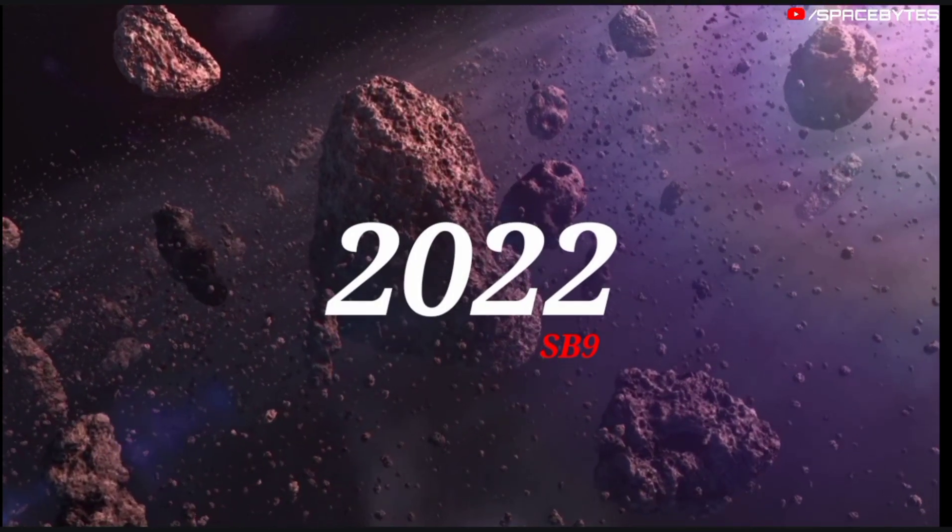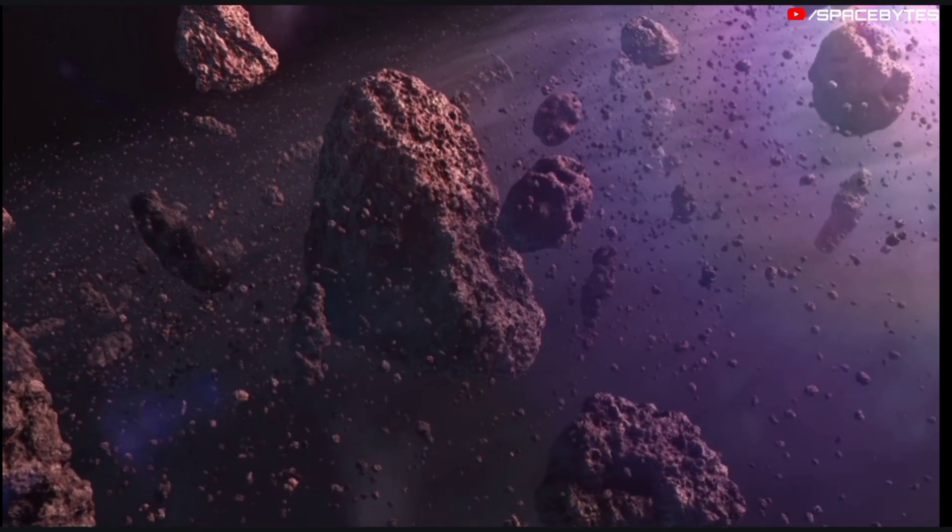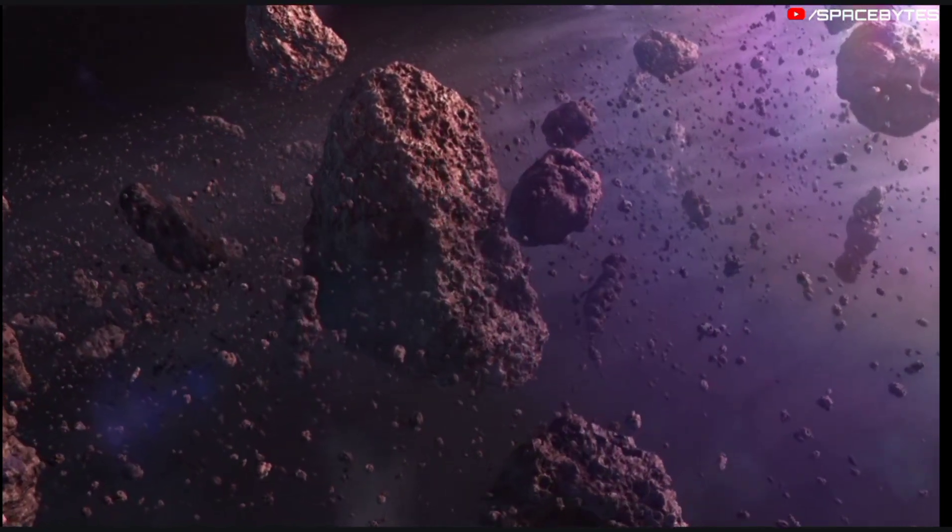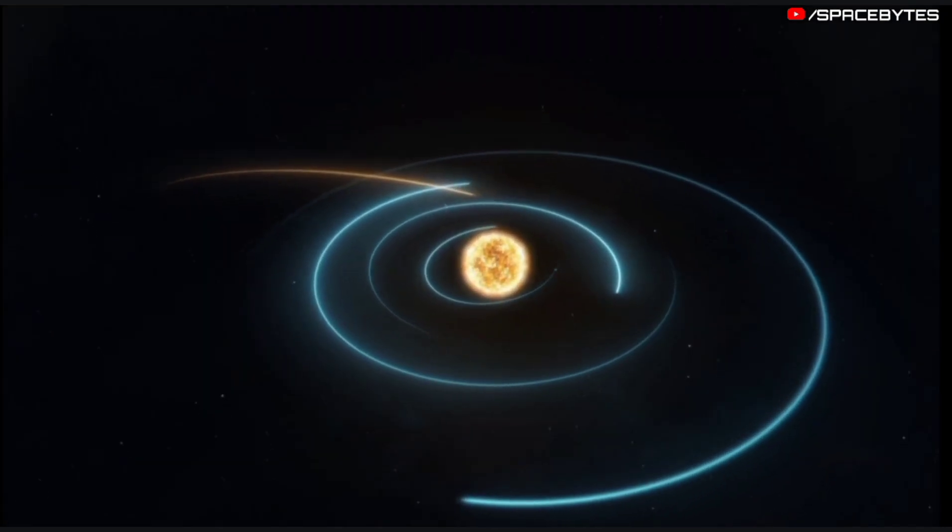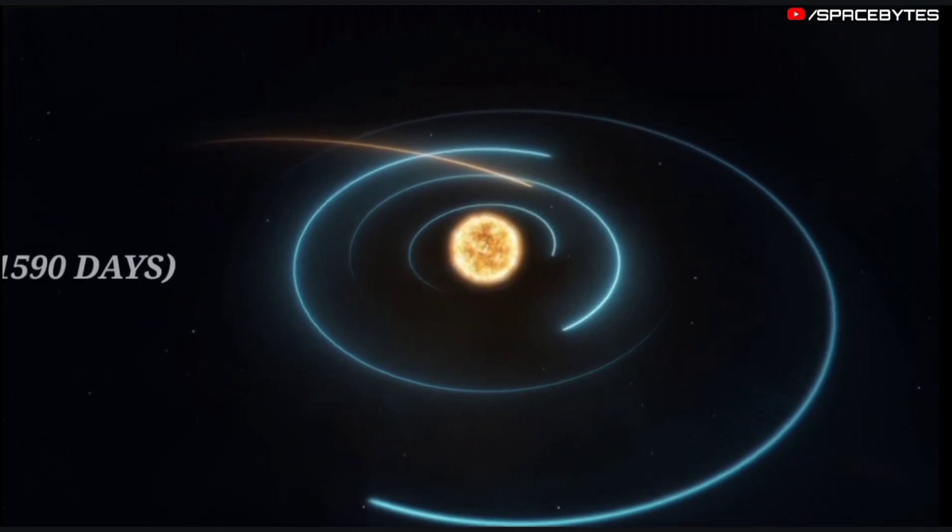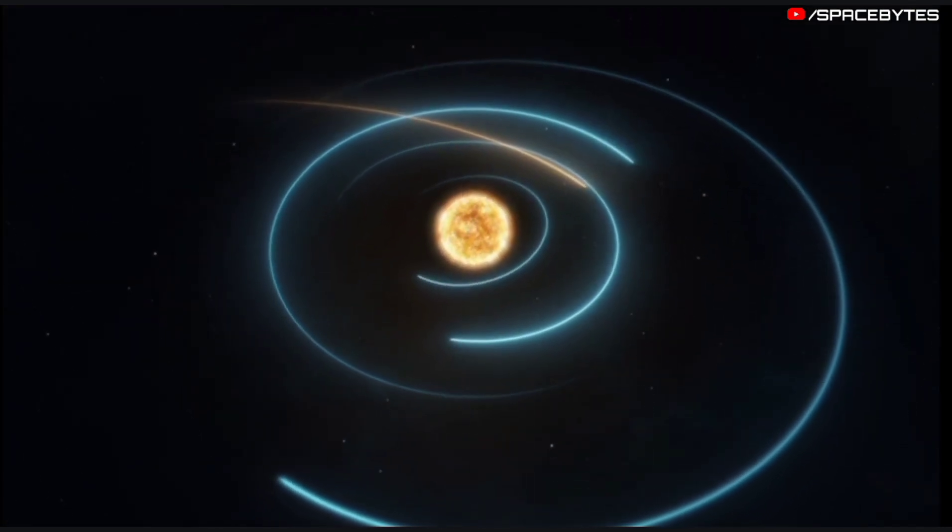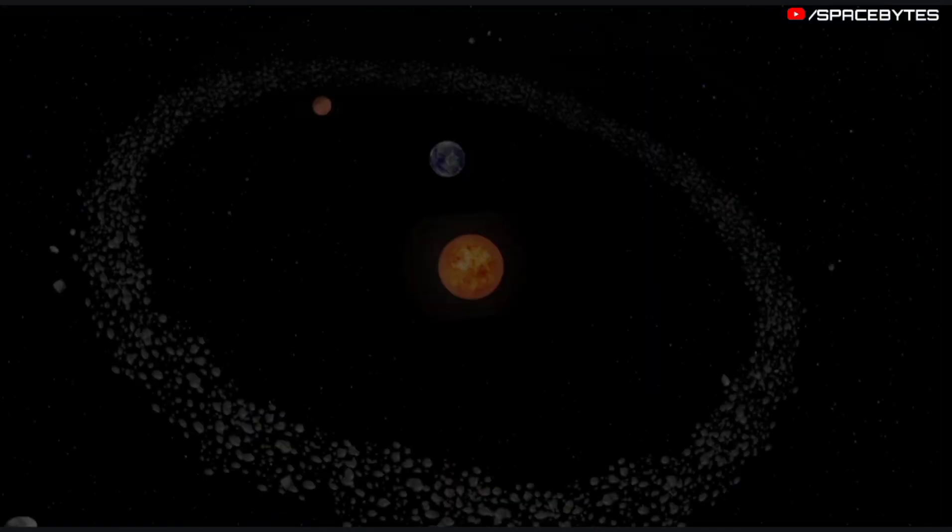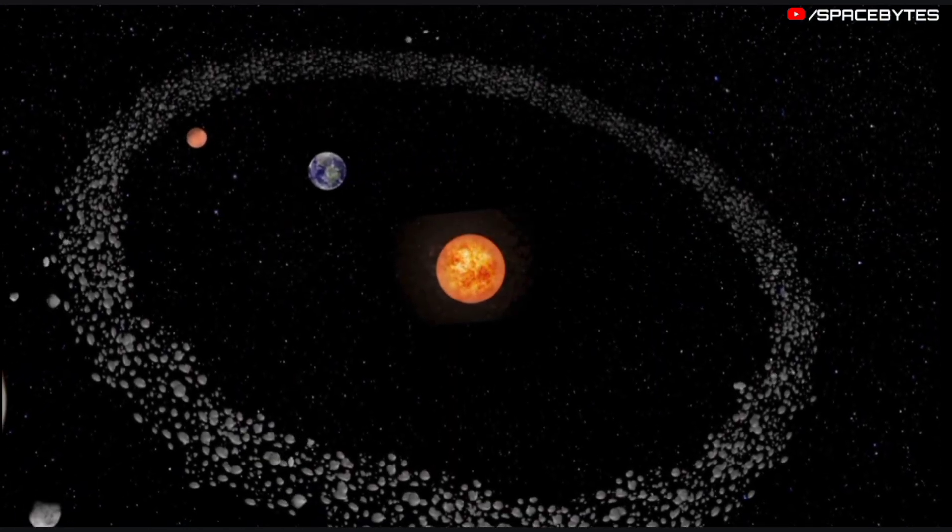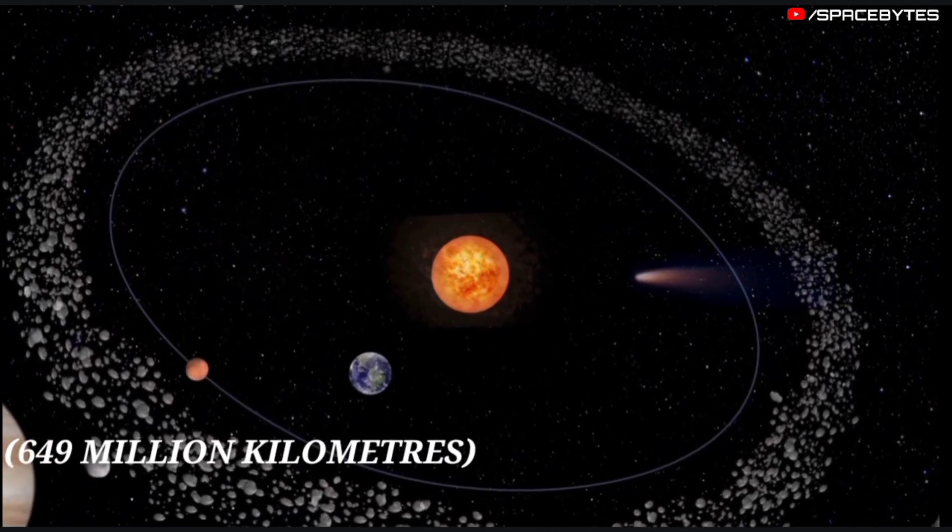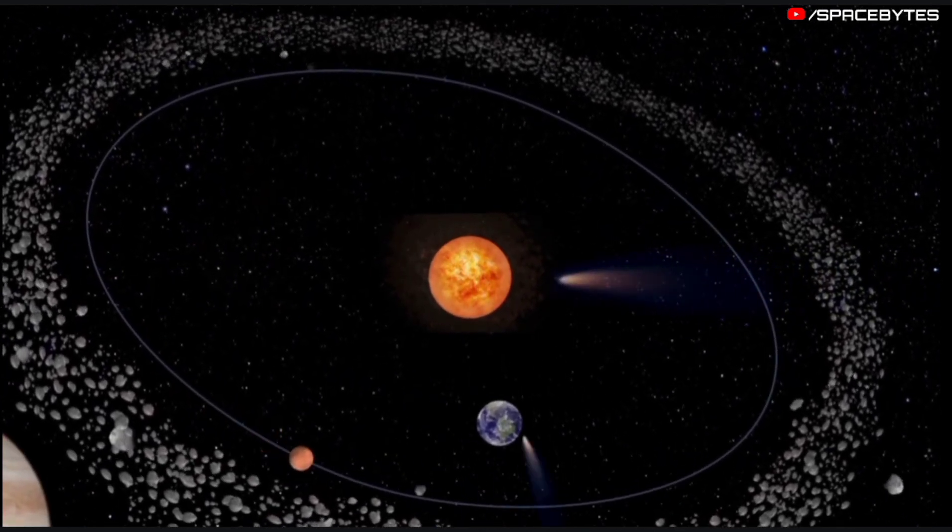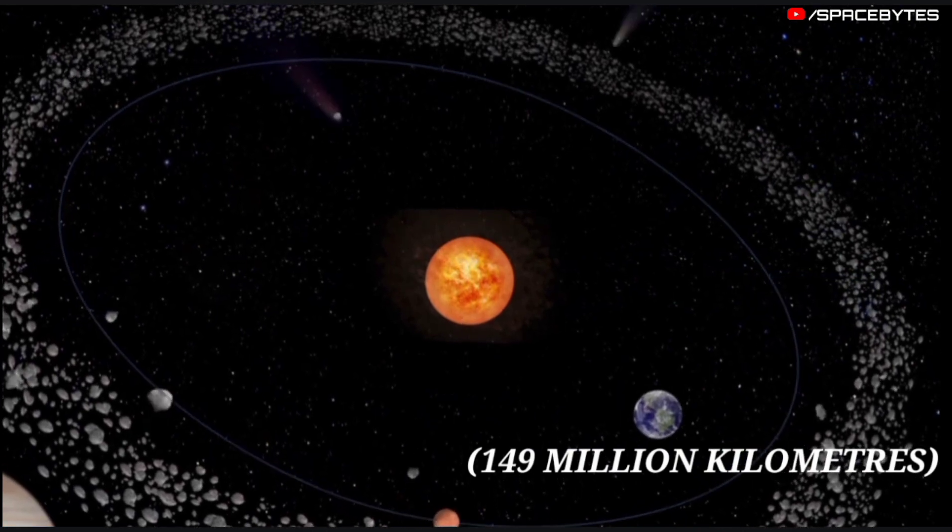Asteroid 2022 SB9 belongs to the Apollo group of asteroids, located in the main asteroid belt between Mars and Jupiter. The asteroid takes 1,590 days to complete one orbit around Earth. During this trip, its maximum distance from the Sun is 649 million kilometers and its minimum distance is 149 million kilometers.